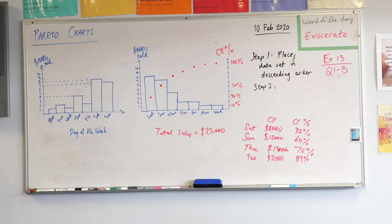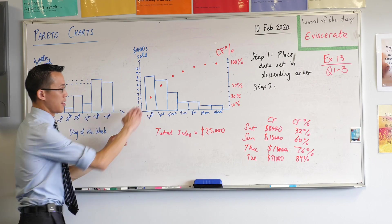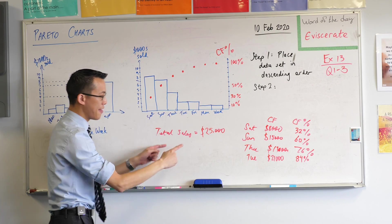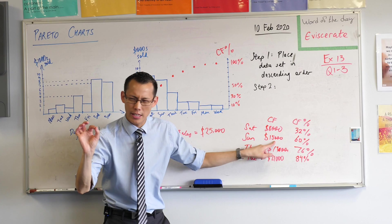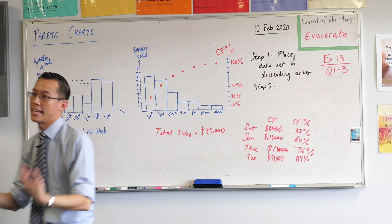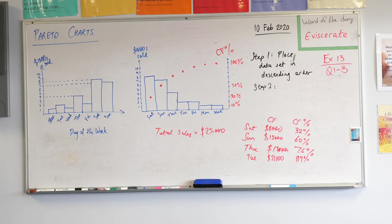So the first dot you can see here, that represents 32%. And then the next one, it's cumulative, not just frequency. So I get bigger and bigger and bigger. I keep on adding each day's sales. Does that make sense?